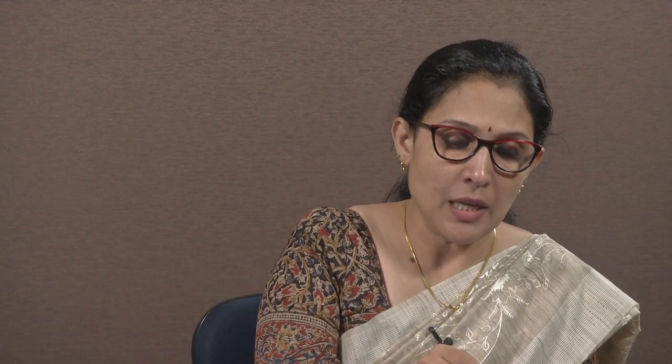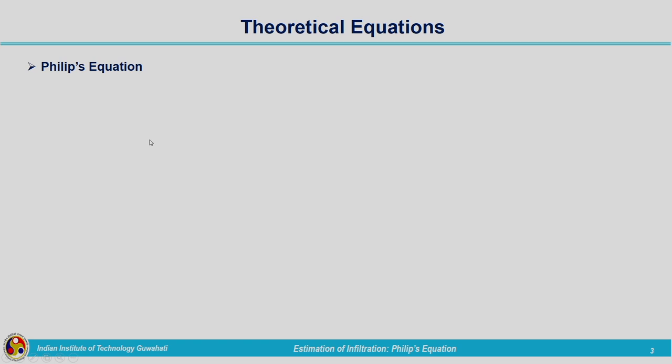These are the theoretical equations, or the analytical solution giving you the solution corresponding to the flow equation, that is based on the fundamental principles we are finding out the solution for the flow equation. First we will see Phillips equation then we will move on to Green-Ampt equation. Phillips equation is the solution for Richard's equation, giving the solution by making use of infinite series.